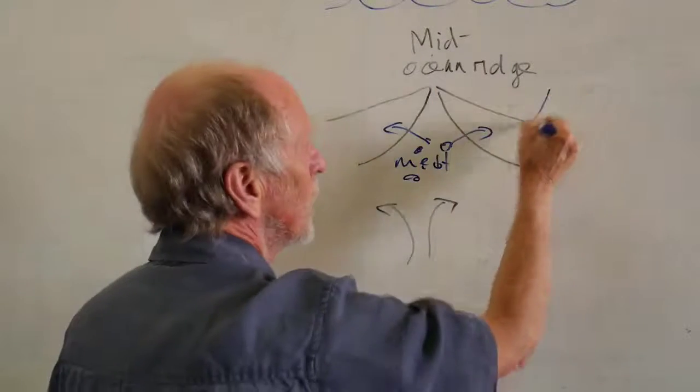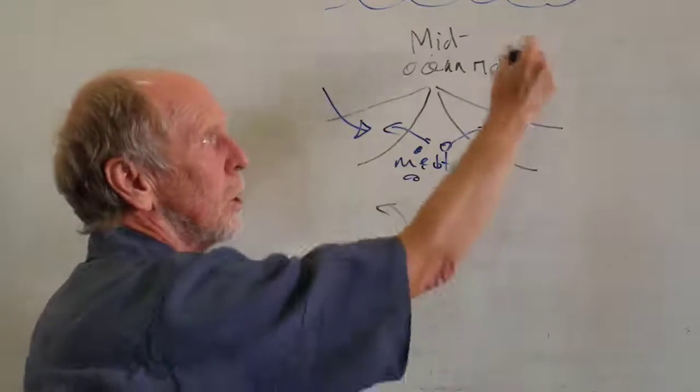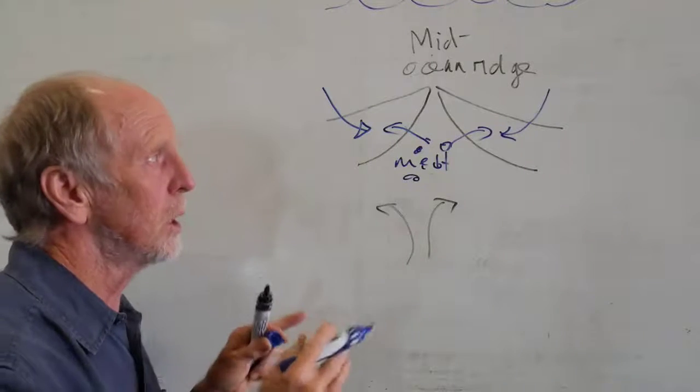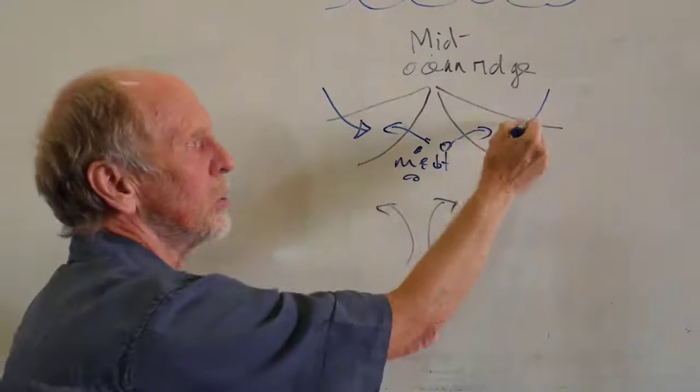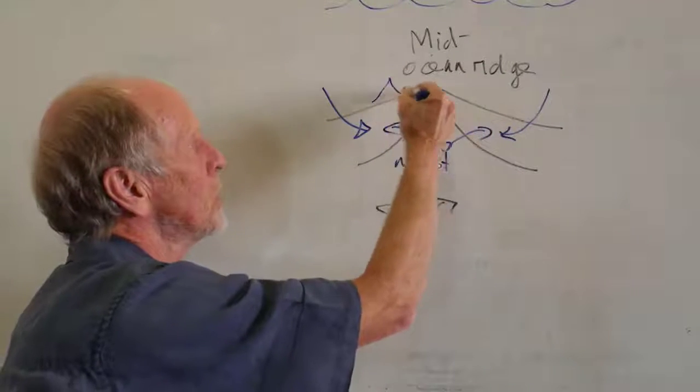What happens on the flanks of the new crust is that ocean water starts to be circulated through the crust. It cools it, and it also leaches out elements from the ocean crust and deposits them.